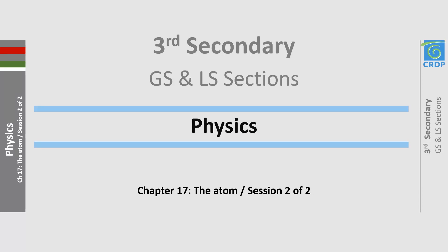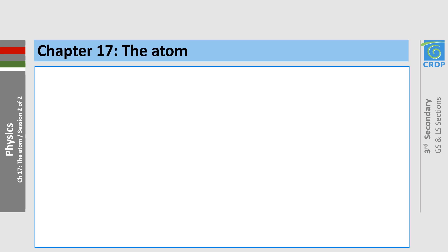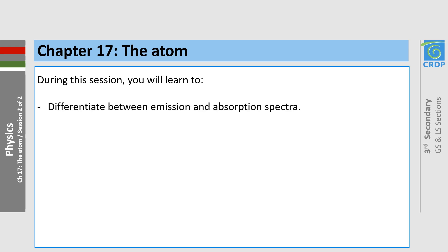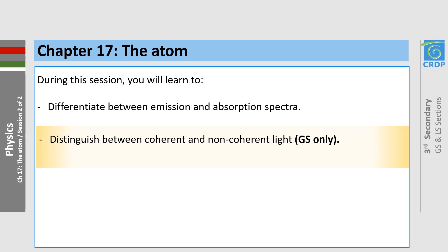Hello everybody and welcome to the second session concerning the atoms. During this session, you will learn to: first, differentiate between emission and absorption spectra; second, distinguish between coherent and non-coherent light; and finally, explain the principle of laser emission.